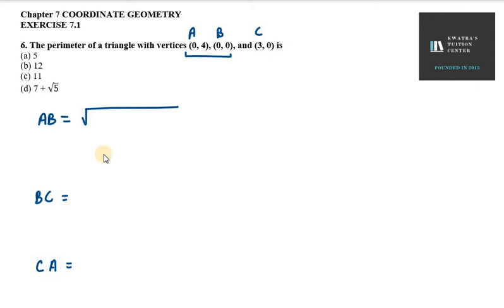So, x2 minus x1 is 0 minus 0 whole square plus 0 minus 4 whole square. Now, minus 4 whole square is 16 only. So, 16 can be written as 4 squared. So under root cancel, you will get 4 units.